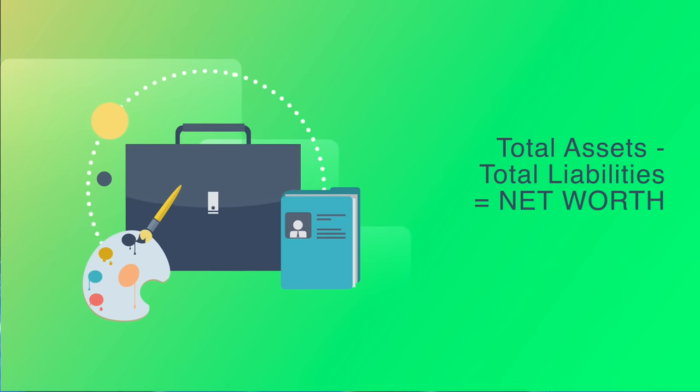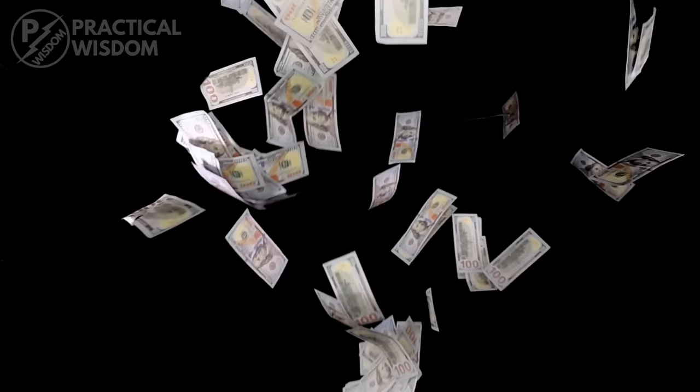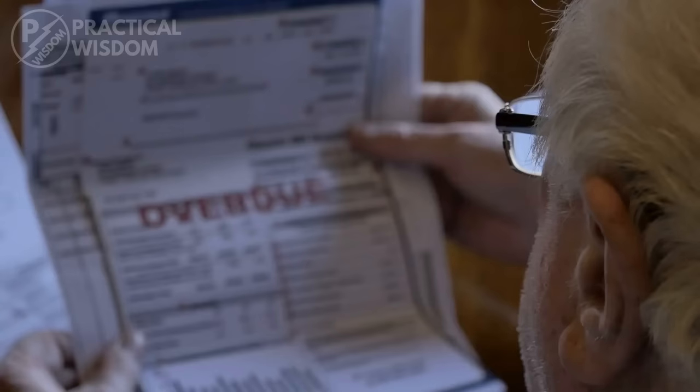The total value of all your assets minus the total value of all your obligations equals your net worth. Net worth is the difference between what one has and what one owes. You have a positive net worth if your assets outnumber your obligations, and a negative net worth if your liabilities exceed your assets.